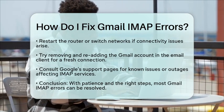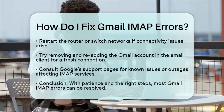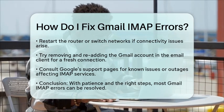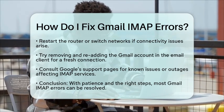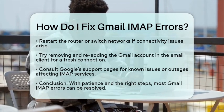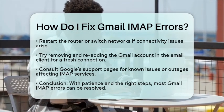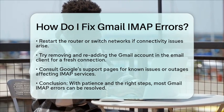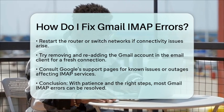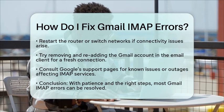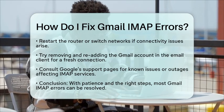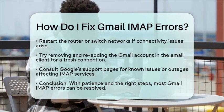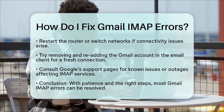Lastly, if none of these steps work, consider checking Google's support pages for any known issues or outages that might be affecting IMAP services. They often provide updates and solutions for ongoing problems. By following these steps, you should be able to resolve most Gmail IMAP errors and get back to managing your emails without hassle. Remember, troubleshooting can take a bit of patience, but with the right approach, you can overcome these challenges.